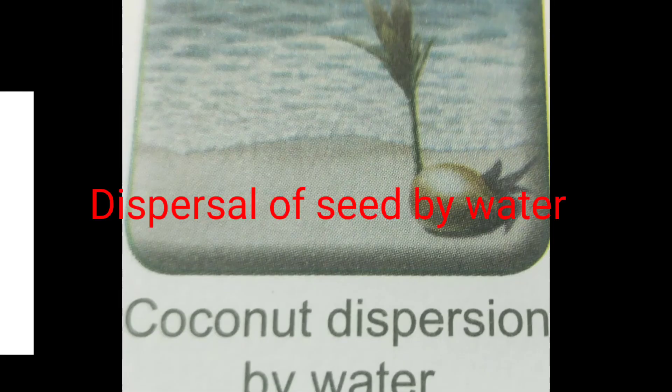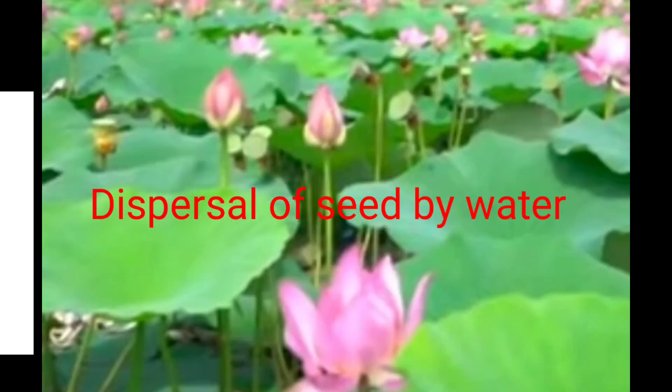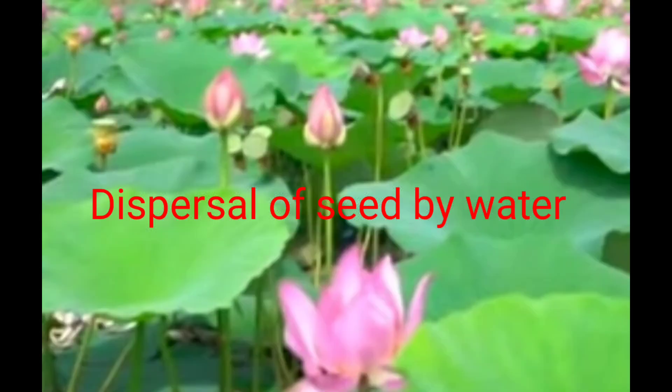Dispersal by water: The seeds of the lotus are spongy, while the coconut seeds have a fibrous covering. These features help them to float on water. They get dispersed to farther places by water current.